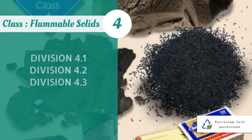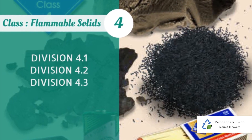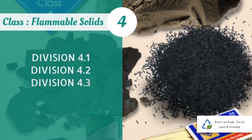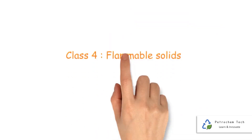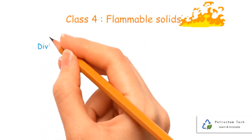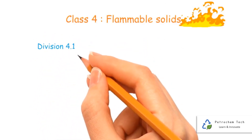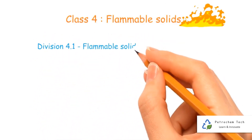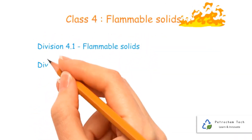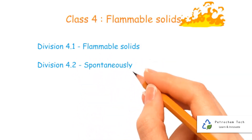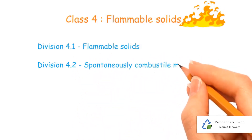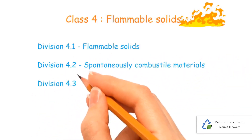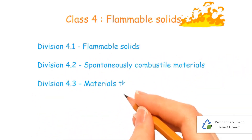Class 4 - Flammable Solids, consisting of three divisions. Flammable solids are any materials in the solid phase of matter that can readily undergo combustion in the presence of a source of ignition under standard circumstances.